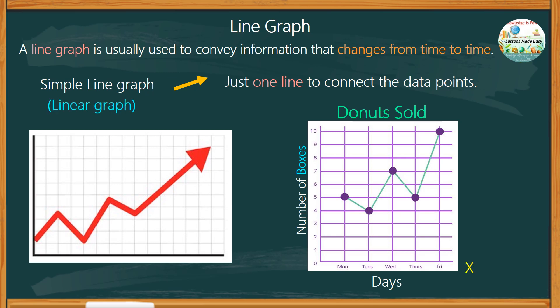The x-axis, or the horizontal axis, is labeled as time. And the y-axis is the variable that is being measured, which is the number of boxes of donuts sold within a period of 5 days.